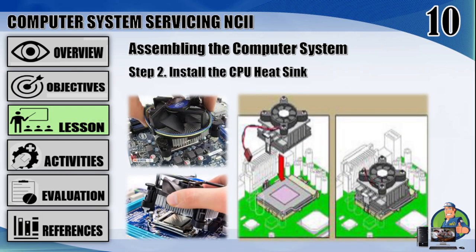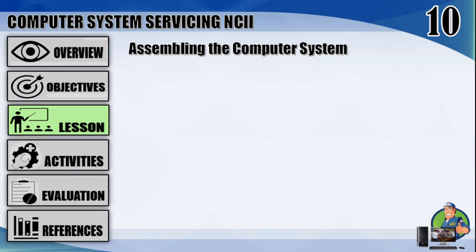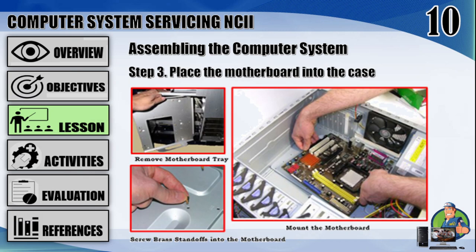Step 2: install the CPU heat sink — the heat sink will be attached on top of the processor. The CPU fan is also attached on top of the heat sink. Attach the clip that holds the heat sink in place, keeping in mind that it may require a fair amount of force. Plug the CPU fan's power connector into the proper port. Step 3: place the motherboard into the case — the motherboard is to be fixed vertically in the power case and the screws are fixed from behind the motherboard.